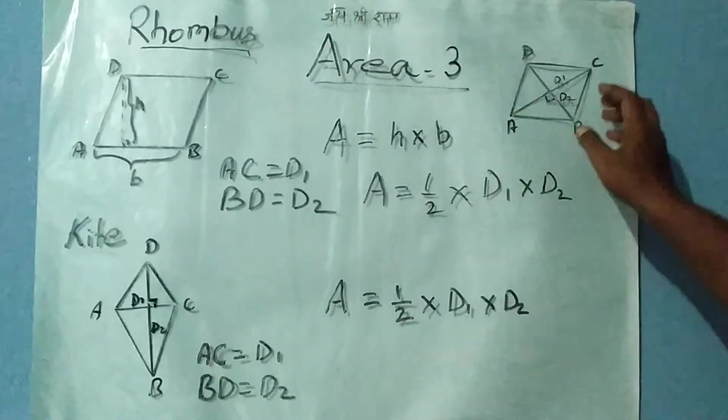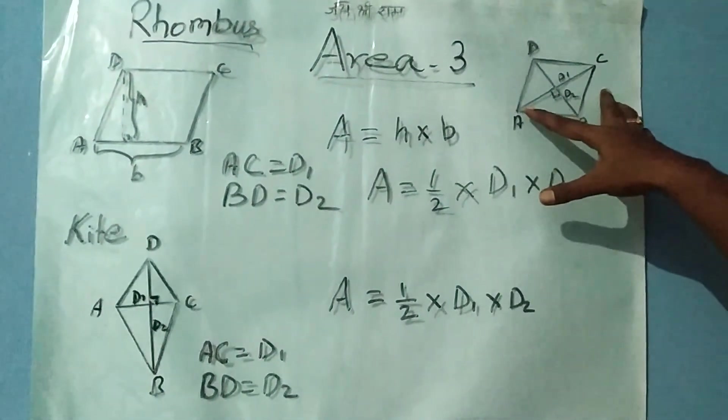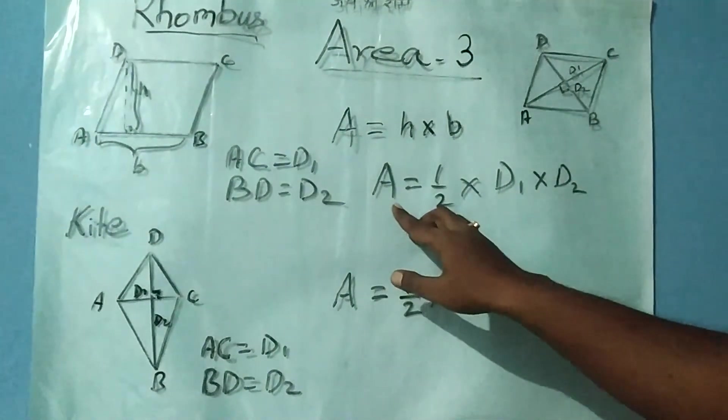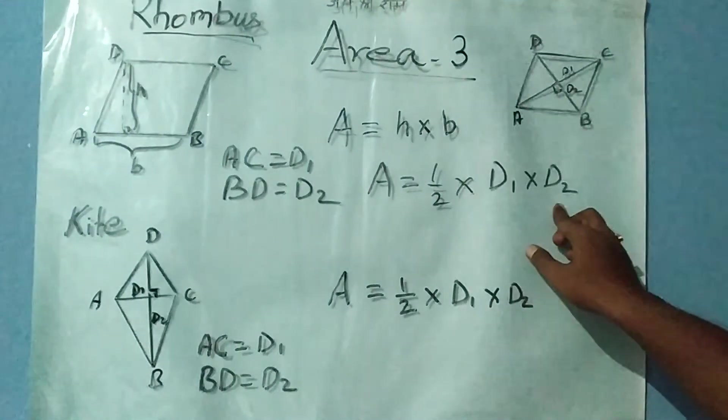And another formula: if we know the length of the diagonals, we can apply this formula. Area will be half × diagonal 1 × diagonal 2.